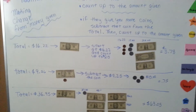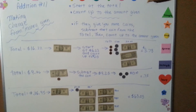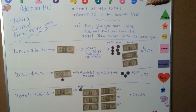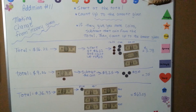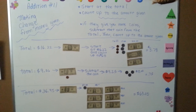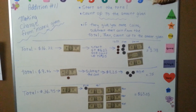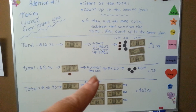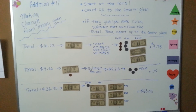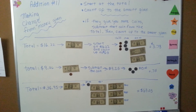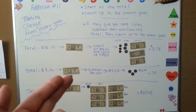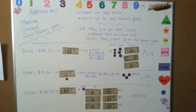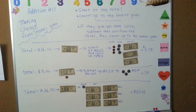Remember when you're giving change: start at the total and count up to the amount they've given you, and if they give you more coins than you expect, subtract that coin from the total and then count up to the dollar bill increment that they gave you. And that's how you give change. Thanks for listening.